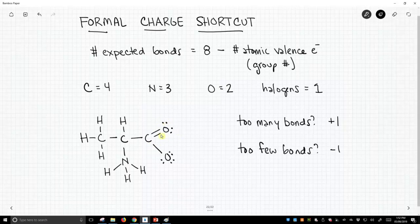This oxygen has two bonds. Again, it's a double bond, but that's two bonds. We expect two bonds. That oxygen must be neutral. Here's an oxygen. It only has one bond. One bond is too few bonds because it should make two. Therefore, this oxygen has a negative charge.